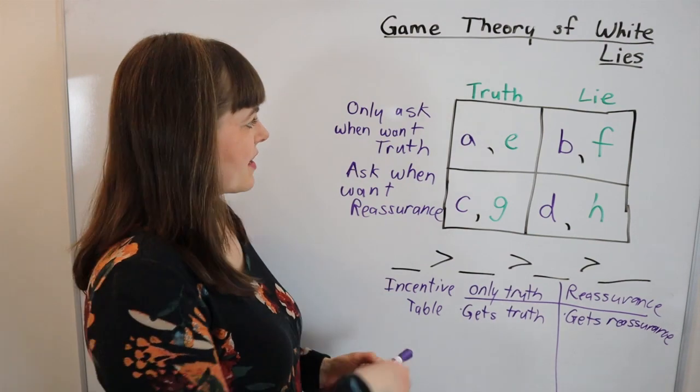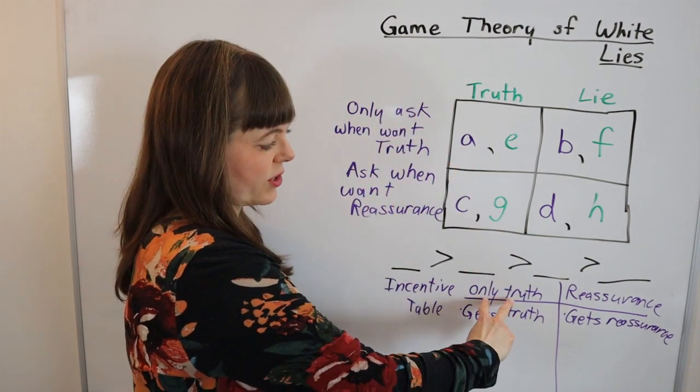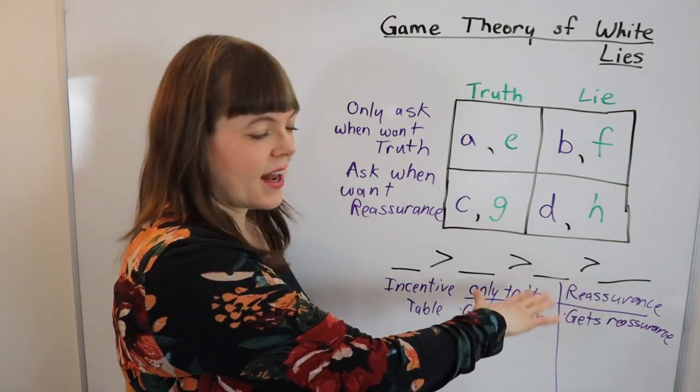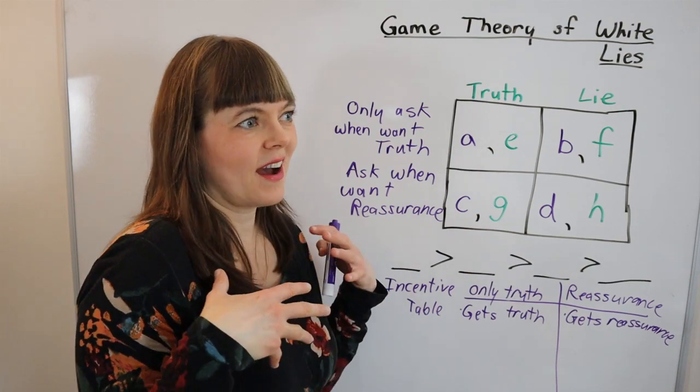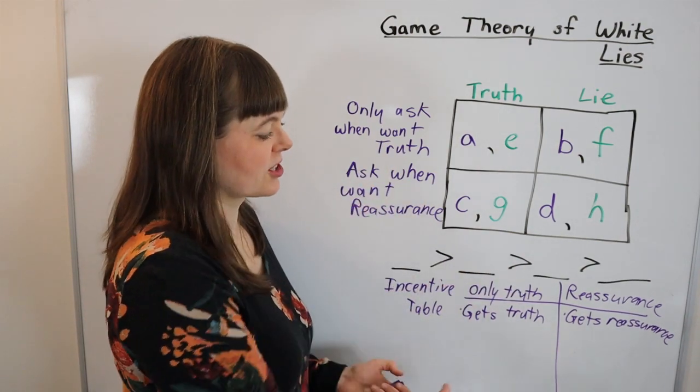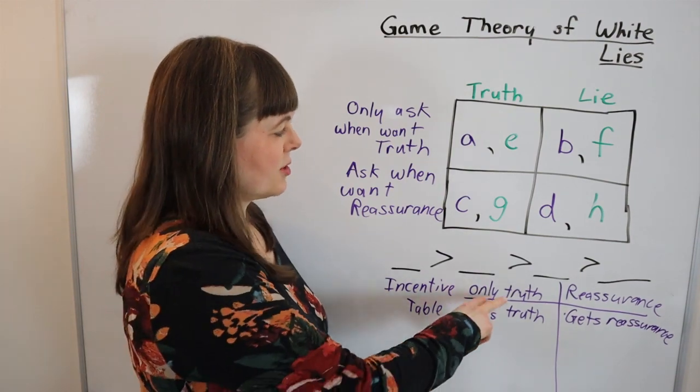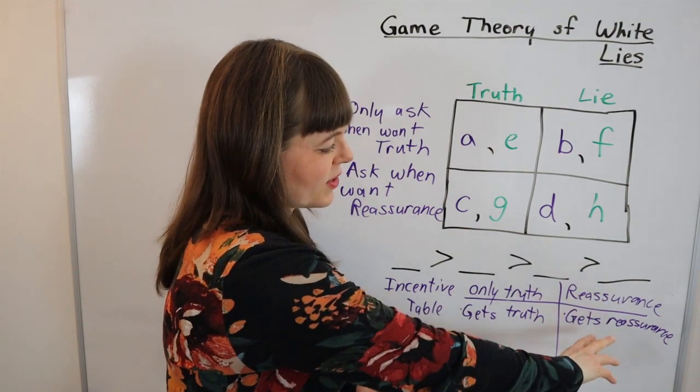So what I've done here is I've taken the two strategies that she's got - only ask when you want the truth and ask when you want reassurance - and I'm brainstorming why would she take these strategies, what are the utility motivators or psychological motivators for each strategy. Of course she might want this one if she wants to get the truth from her boyfriend, she might want this one if she wants reassurance.